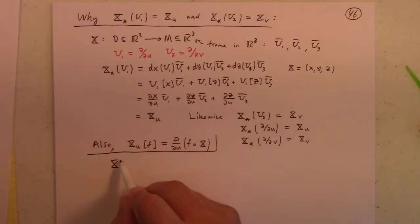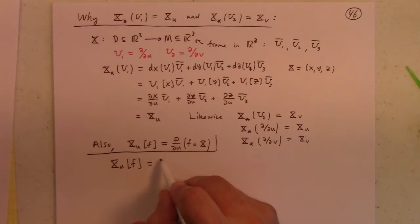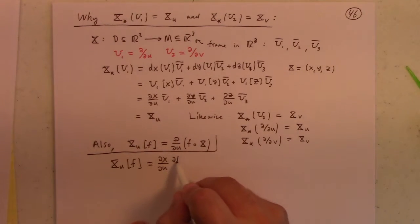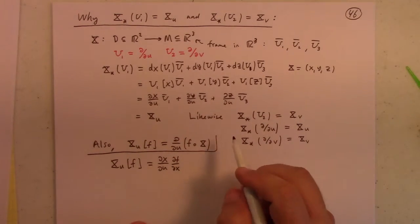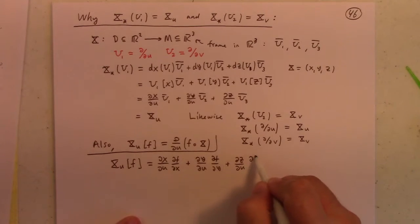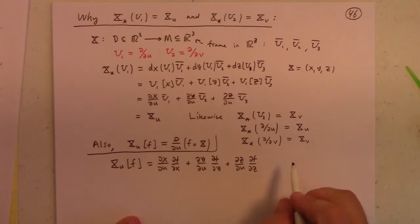Well, XU acting on F, right? What is that? Well, as we just wrote up here, that's partial X partial U, U bar 1. But what is U bar 1? Well, U bar 1 is partial F partial X. Now, and then we've got partial Y partial U, partial F partial Y, partial Z partial U, partial F partial Z. But what is that? Well, that's nothing more than partial partial U of composite.